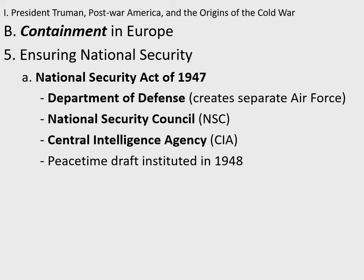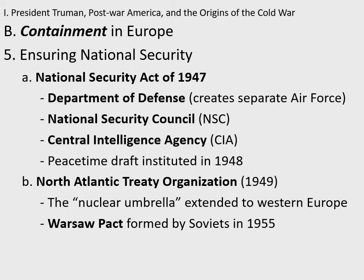Continuing containment in Europe — we realize we need to do different things at home and in our policies around the world. We pass the National Security Act of 1947. This changes the War Department to the Defense Department — Defense sounds safer, more "good guy" than War Department. We create a separate Air Force, spinning off from the Army. We create the National Security Council. We create the CIA — the Central Intelligence Agency — spinning off from the OSS, the Office of Special Services. We begin to see a rapid increase in intelligence agencies over the next decades until we have roughly 17 publicly acknowledged intelligence agencies today. We also institute a peacetime draft in 1948 to prepare for future conflicts.